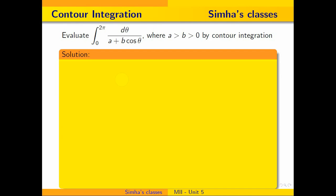Now, I am taking I equal to the given integration, that is the integral from 0 to 2π of dθ divided by (a + b cosθ). My first objective is to make this real integration into a complex integration. For that, I am going to do some substitution.